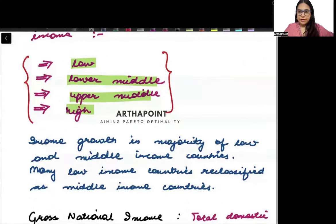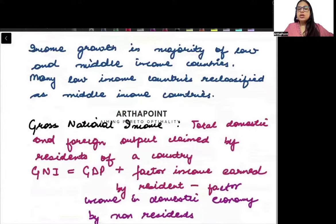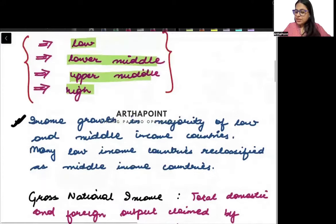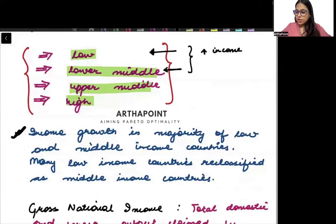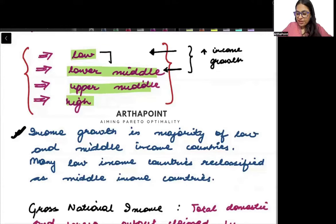We divide countries on the basis of income. Income growth is major in the majority of low and middle income countries, and many low income countries have been reclassified as middle income countries. With time, it has been seen that the income of these lower and lower-middle income countries has been growing, and many have moved up to middle income status.